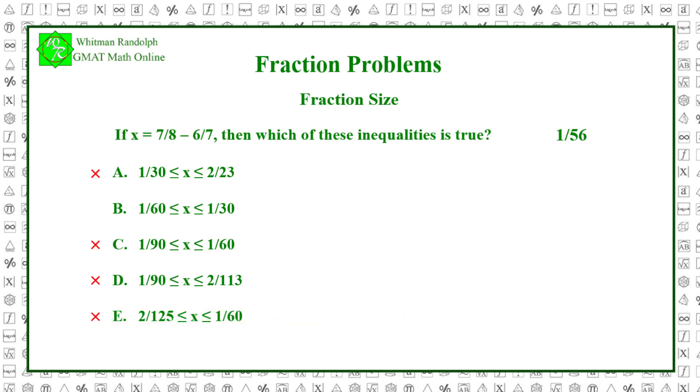Now let's go back to B. x is greater than or equal to 1 over 60 and less than or equal to 1 over 30. x does fit here because 1 over 56 is greater than 1 over 60 but less than 1 over 30. So the correct answer is B.